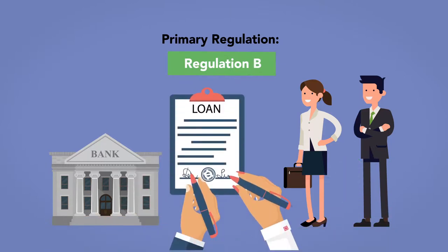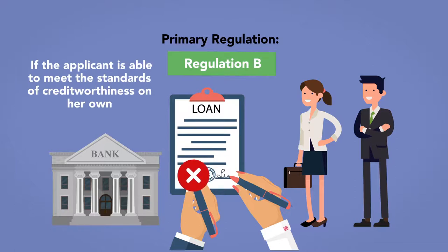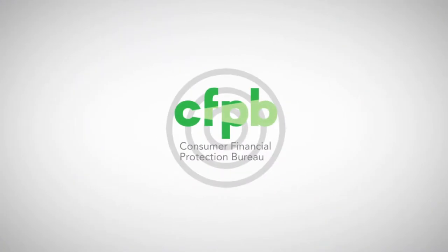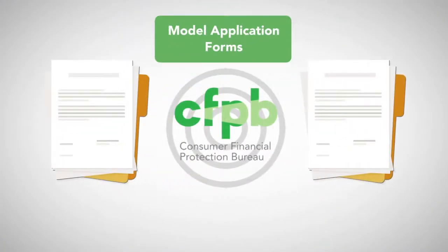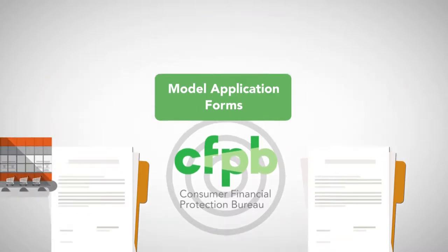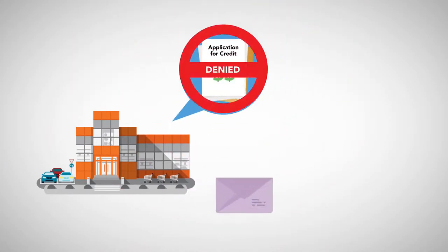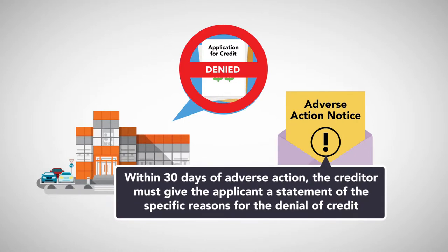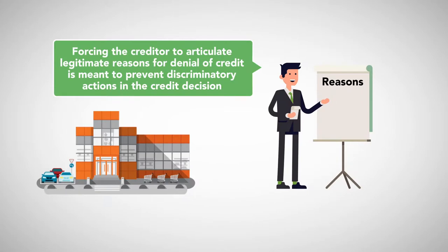A creditor also may not require the signature of the applicant's spouse, if the applicant is able to meet the standards of creditworthiness on her own. This rule was implemented to enforce the ban on marital status discrimination. The Consumer Financial Protection Bureau provides creditors with model application forms to demonstrate how one can comply with Regulation B. It's not mandatory to use these forms, but if they are used, the creditor is deemed to be following Regulation B's application requirements. If the creditor chooses to deny an application for credit, it must provide a written notice to the applicant called an adverse action notice. It requires that, within 30 days of the adverse action, the creditor must give the applicant a statement of the specific reasons for the denial of credit. Forcing the creditor to articulate legitimate reasons for denial of credit is meant to prevent discriminatory actions in the credit decision.